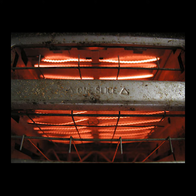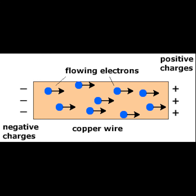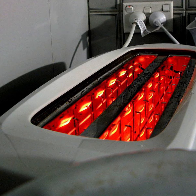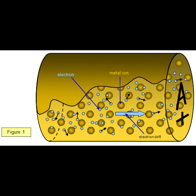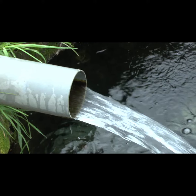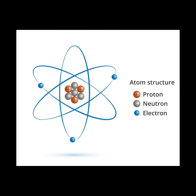Rows of glowing red wires are facing the bread. When electricity flows through these wires, they get hot and then fire the heat towards the bread like dozens of miniature radiators. The electrical energy is carried down the wire by electrons — the tiny particles inside the atoms of the metal that make up the wire.